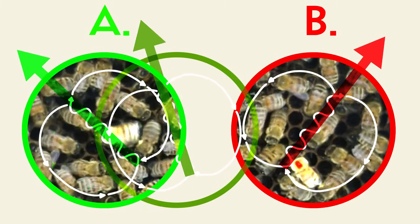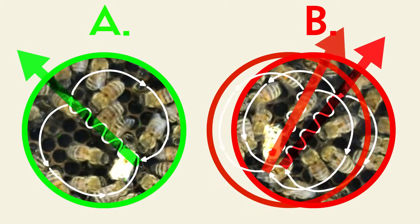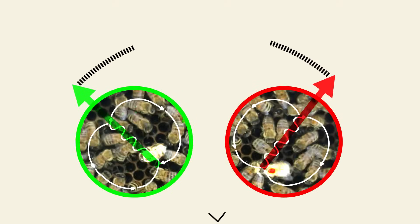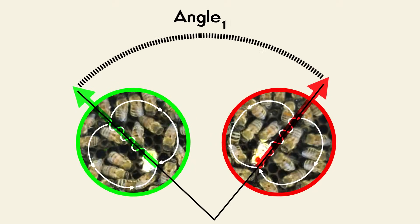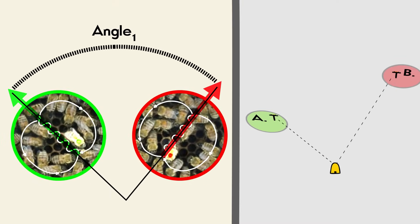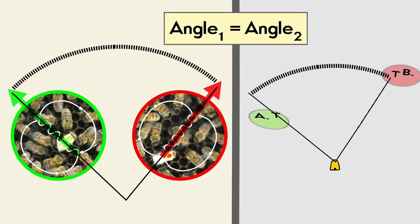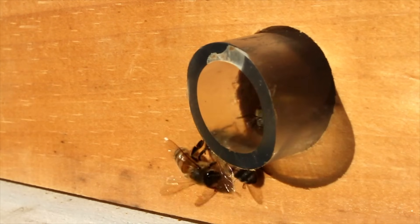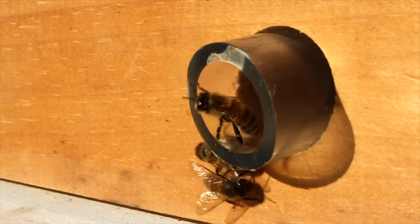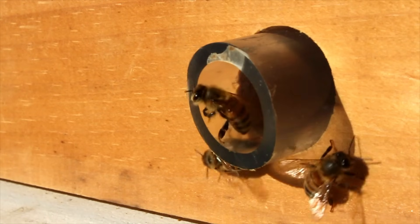Bees returning from one feeder perform a rotated version of the dance done by the other bees. Incredibly, the angle of rotation precisely matches the angle between the feeding stations and the hive. This must be a clue to the mystery of how the bees are able to share information about the location of food.